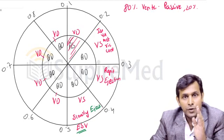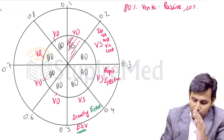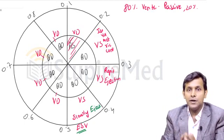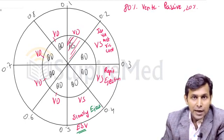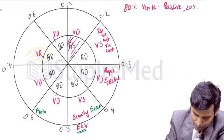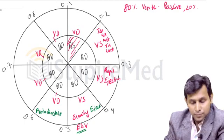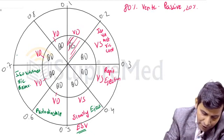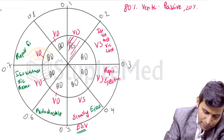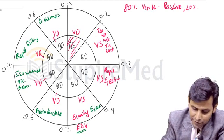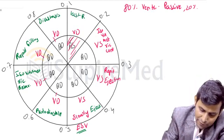Please keep end-systolic volume and end-diastolic volume in mind because there are MCQs on these. Now the moment blood has moved from the ventricles into the aorta, ventricular systole gets over and ventricular diastole starts. The ventricular diastole is 0.5 seconds and its phases are: protodiastole, isovolumetric relaxation, first rapid filling phase, diastasis or slow filling phase, and the last rapid filling phase.